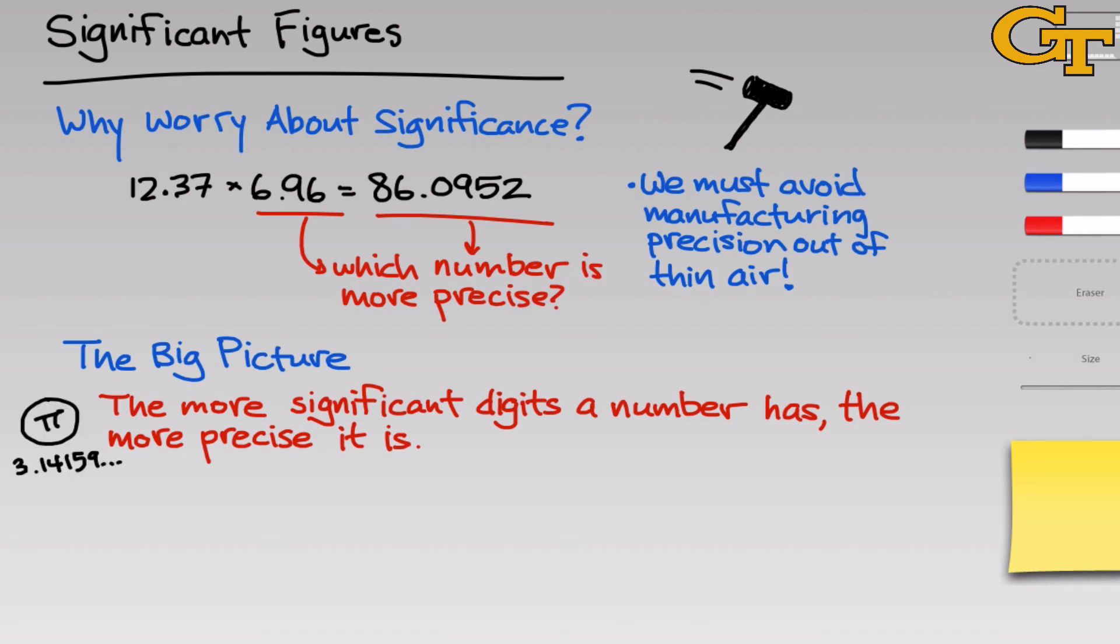One of the reasons, for example, we continue to study numbers like pi, which have now millions upon billions of digits known, is that we can know pi with greater and greater precision as we find more and more digits within this number. So more digits is a good thing. It leads us to more precise information.